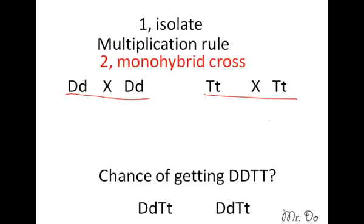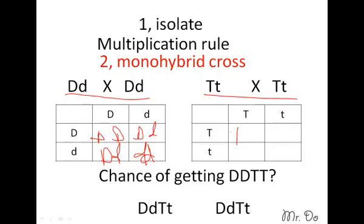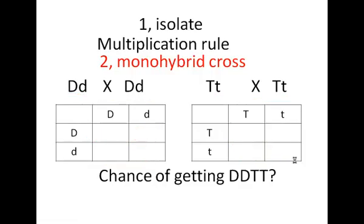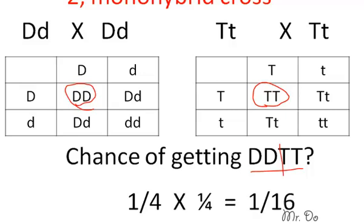The second rule is to turn it into a monohybrid cross. For D, the monohybrid cross gives DD, Dd, Dd, and dd. We do the same for T, giving TT, Tt, Tt, and tt. Now figure out the percentage for each. The chance of getting homozygous dominant DD is 1 out of 4. For T, the chance of getting homozygous dominant TT is also 1 out of 4. Then you multiply both together and get 1 out of 16.